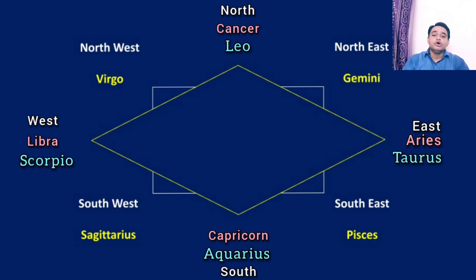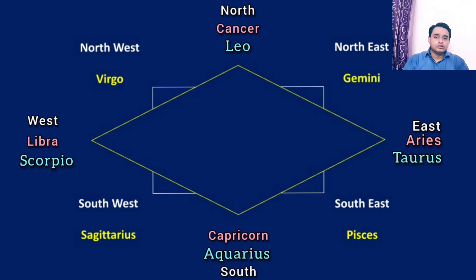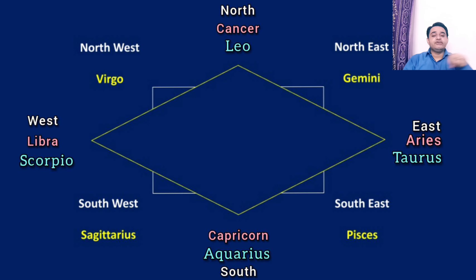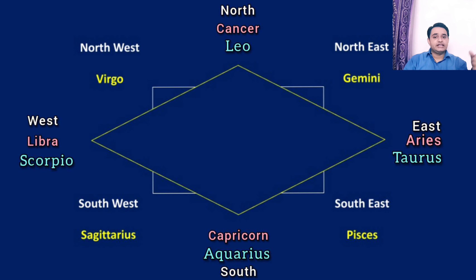In the cardinal directions — east, north, west, and south — we will mark the mobile signs and the fixed signs. And in the corner directions, we will mark the dual signs, that is Gemini, Virgo, Sagittarius, and Pisces. From this square, if we choose one particular direction, the sign placed in that direction will aspect the other 3 directions. For example, the sign placed in the east will be aspecting the signs placed in north, west, and south. Similarly, a sign placed in south-west will aspect north-east, north-west, and south-east.